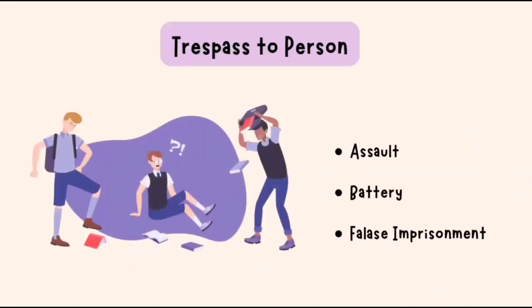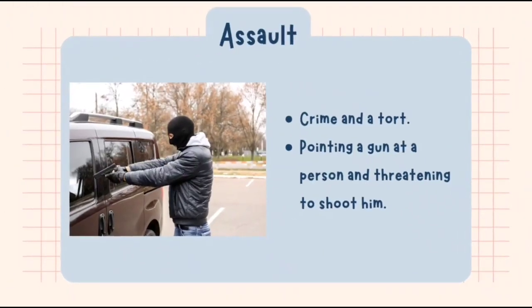Next is trespass to person. Trespass to person has three forms, which are assault, battery, and false imprisonment. The first one is assault. Assault is a crime and a tort. It arises if the defendant intentionally or negligently does an act which directly causes the plaintiff to apprehend immediate contact with his person. For example, pointing a gun at a person and threatening to shoot him. There is no requirement that actual physical violence result.